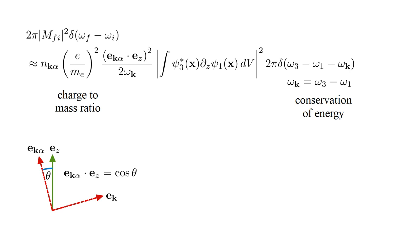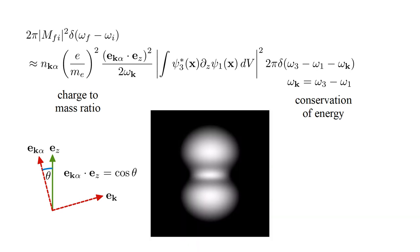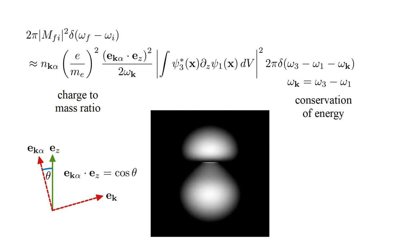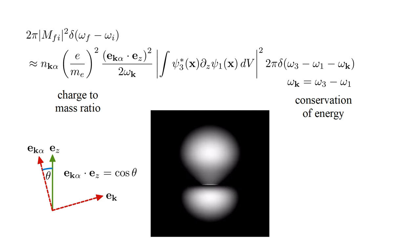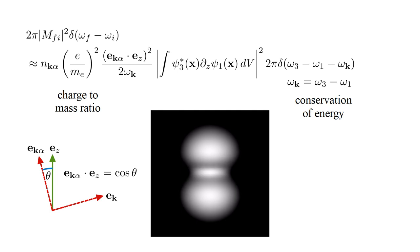An analogous factor is present in the expression for the power received by a wire antenna illuminated by a plane wave. From the quantum mechanics series, we saw how the superposition of 1s and 2pz orbitals produces a time-varying probability distribution for the electron that oscillates at the difference of the orbital frequencies, which equals the radiation frequency. This geometric factor tells us that the absorption process is most efficient when the photon polarization is aligned with the direction of this oscillation, which we have taken to be the z-axis.